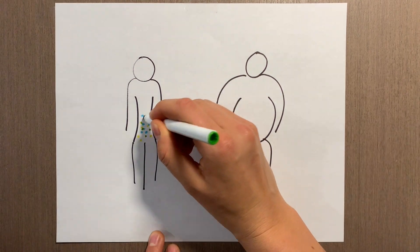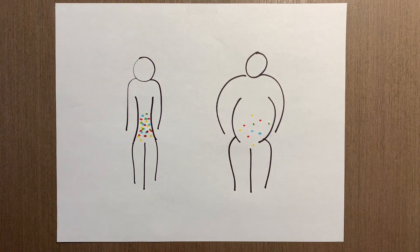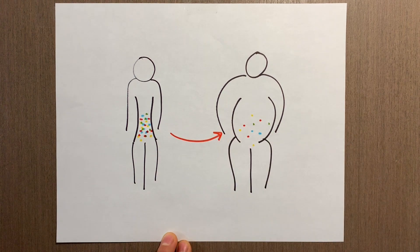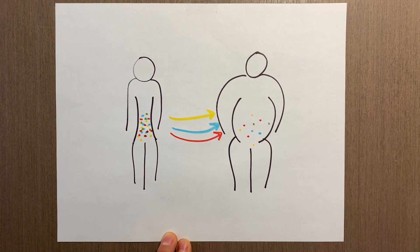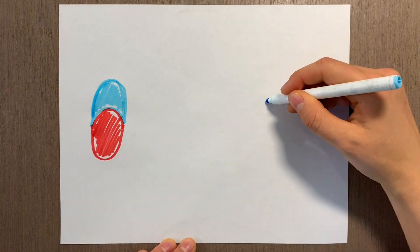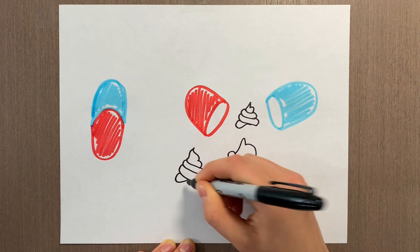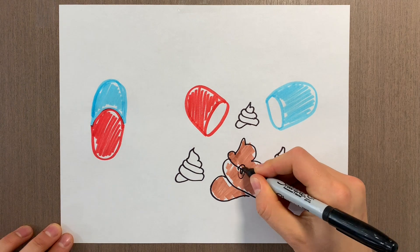we could possibly reduce some of the symptoms associated with obesity, such as weight gain and inflammation. This is where fecal microbiota transplant comes in, which involves transferring gut microbiota from a lean individual into an obese one.